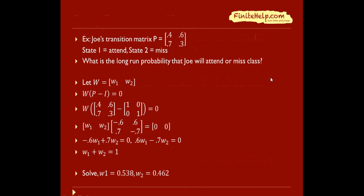Let's look at an example. Again, Joe's transition matrix. Let's find out what the long-run probability that Joe will attend or miss class. Here I'm going to have W equals little w1 and little w2. We have this formula, W times (P-I) equals zero. So here's P, here's I. After the subtraction, this is what comes about.